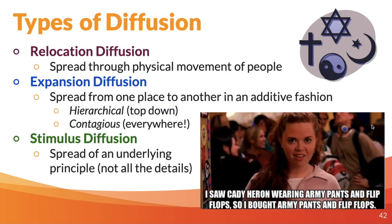There are three main types of diffusion. One is called relocation, one is called expansion, and one is called stimulus. Relocation diffusion is just physical movement — that's typically the case with religion, like we talked about with the Spanish. Expansion diffusion is when it spreads from one place to another in an additive fashion. Hierarchically, it starts with one top figure — a religious leader, political leader, cultural leader — and goes top down from there, with people putting their own spin on it.